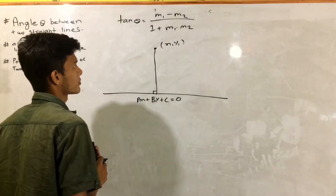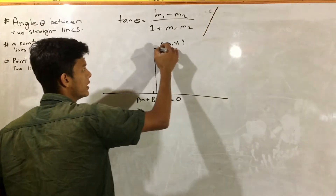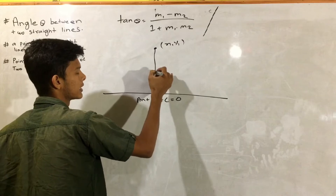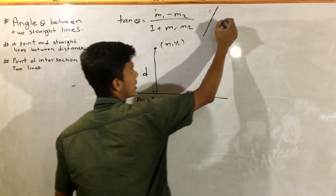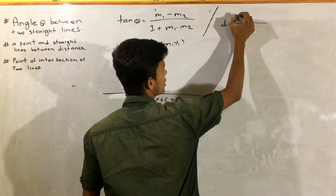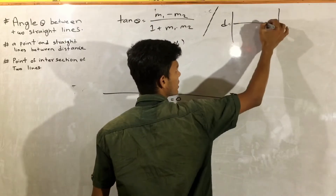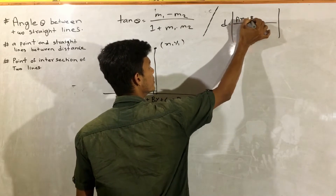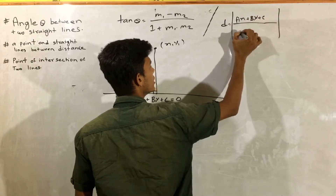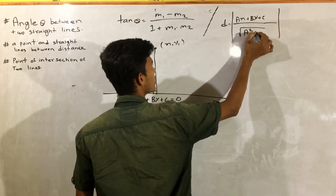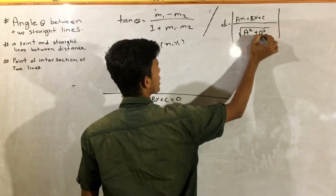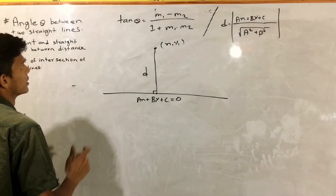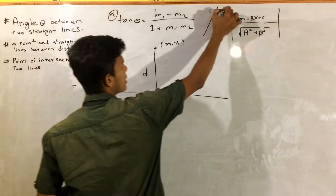This line is ax plus by plus c equal to zero. Point — line distance. Distance is: ax1 plus by1 plus c, divided by root of a squared plus b squared. Formula: a log a b.